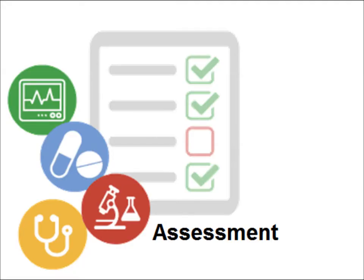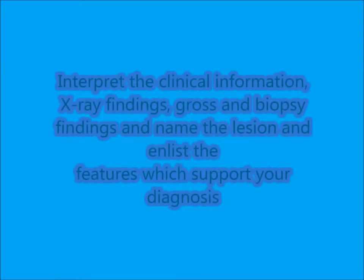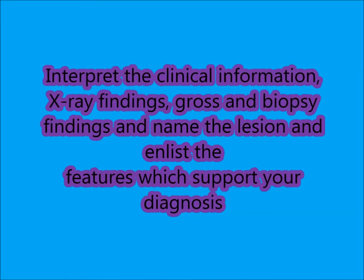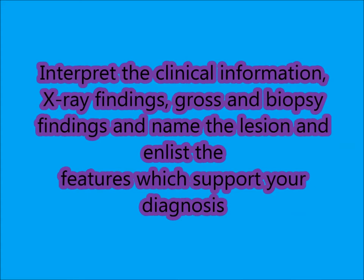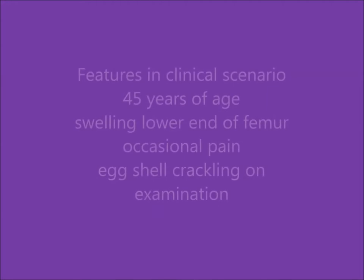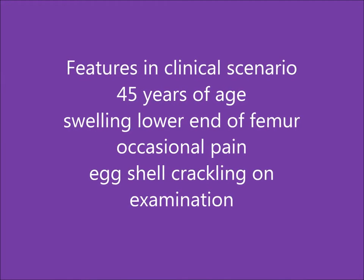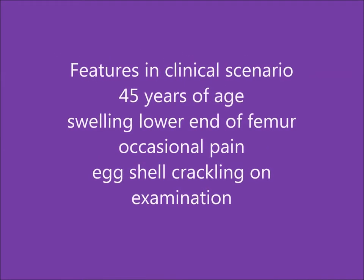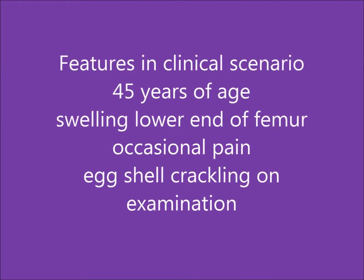Now for assessment: interpret the clinical information, radiological findings, and gross and biopsy findings, name the lesion, and list the features which support your diagnosis. The diagnosis is giant cell tumor of bone. Supportive evidence from the clinical scenario includes: age of 45 years — occurs in the older age group; swelling at the lower end of femur; occasional pain on movement; and egg-shell crackling on examination.